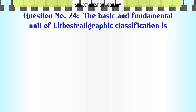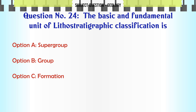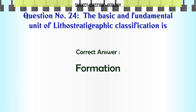The basic and fundamental unit of lithostratigraphic classification is: A. Supergroup. B. Group. C. Formation. D. Member. The correct answer is Formation.